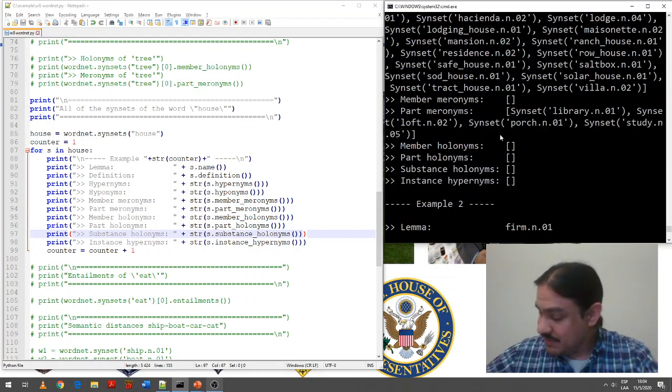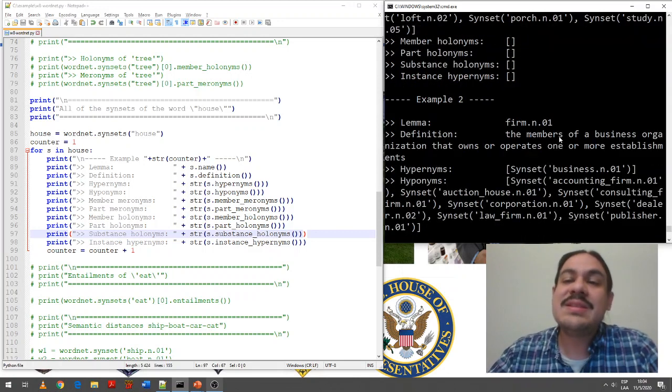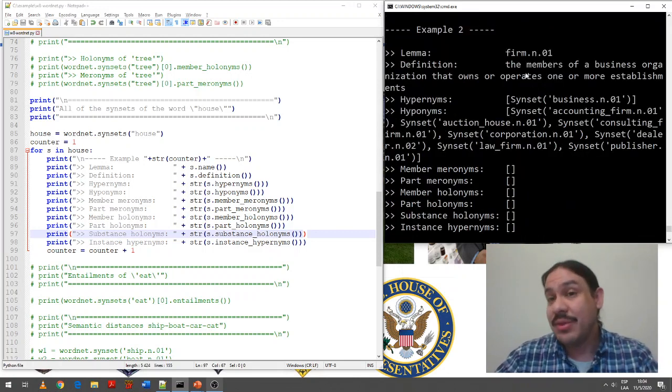Here, we have some meronyms, for example. So, a house has libraries, porch, a study. This is one meaning, but there's other ones, too. There's other synsets.